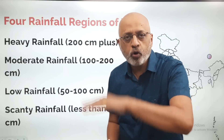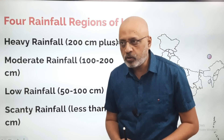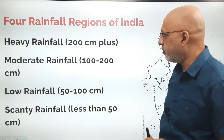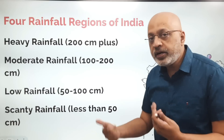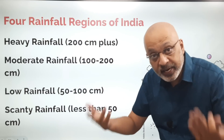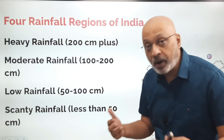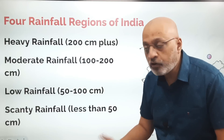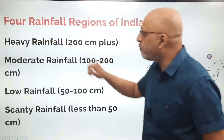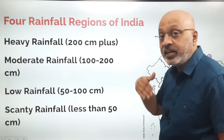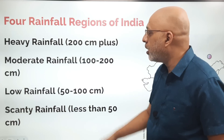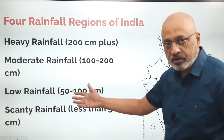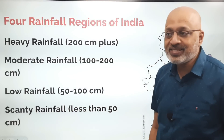We have now come to video number four of the chapter on the Climate of India. In this we will be talking about the four rainfall regions of India. We decide on these four regions by the intensity of the rainfall — how much rain falls. There is the heavy rainfall region where annual rainfall is 200 centimeters plus, moderate rainfall 100 to 200 centimeters, low rainfall 50 to 100 centimeters, and scanty rainfall which is less than 50 centimeters.